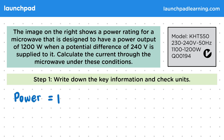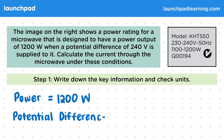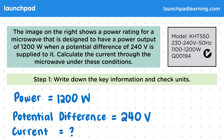The power is equal to 1200 watts. The potential difference is equal to 240 volts. And we want to calculate the current.